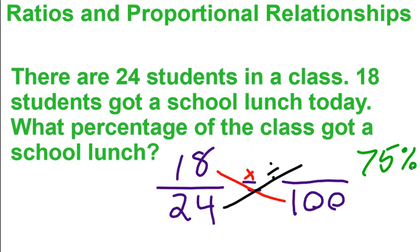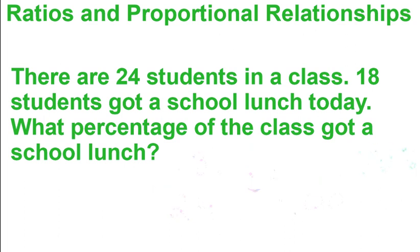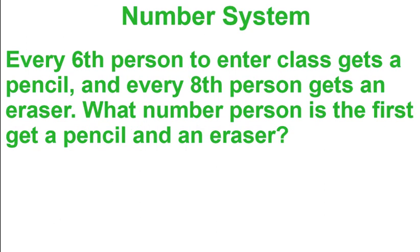There are a bunch of different types of problems that go with ratios and proportional relationships, but that's about a quarter of your test — so about one out of every four questions will be something along those lines. The number system topic covers a lot of things: least common multiple, greatest common factor, absolute value, fractions, decimals, negative numbers.